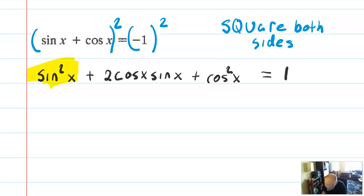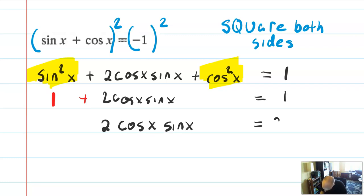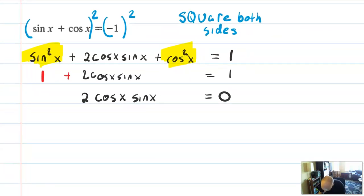When you square the left side, you have to expand it: you get sine squared x plus 2 cosine x sine x plus cosine squared x, and that equals negative 1 squared, which is 1. Sine squared plus cosine squared together equals 1, so you get 1 plus 2 cos x sine x equals 1. Then subtracting 1 from both sides gives 2 cosine x sine x equals 0. This is where we want to be.